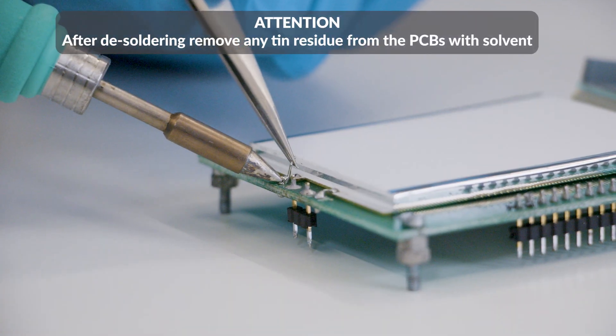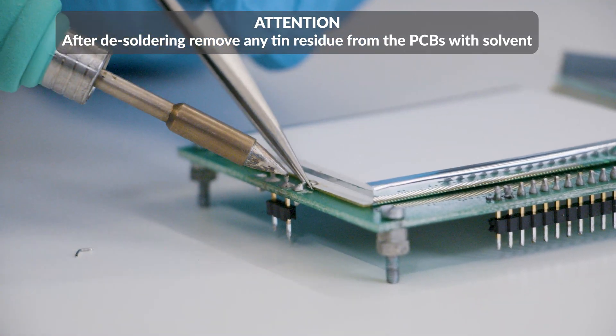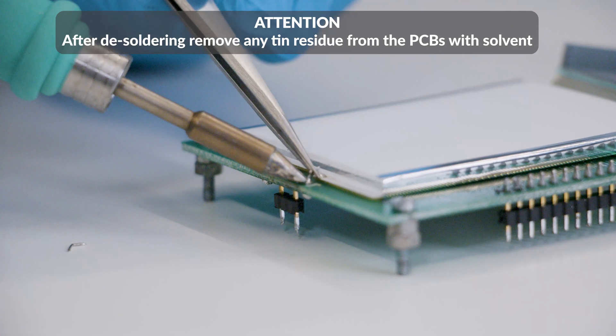With the soldering iron with chisel tip at 350 degrees and tweezers, desolder the clips securing the display housing to the board and keep them aside.